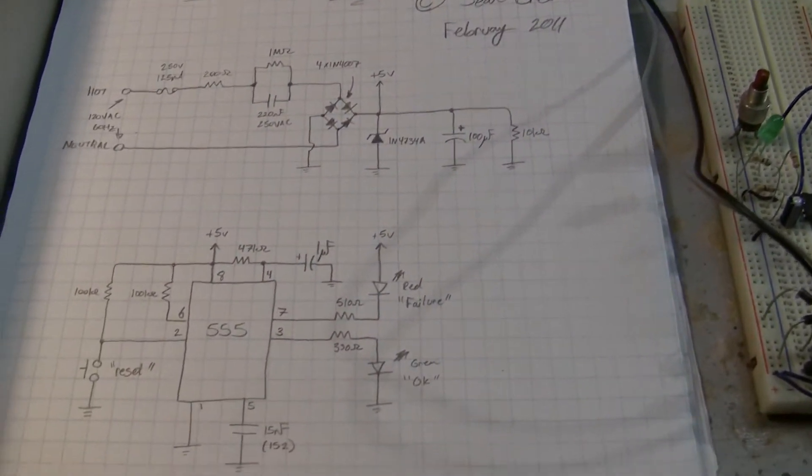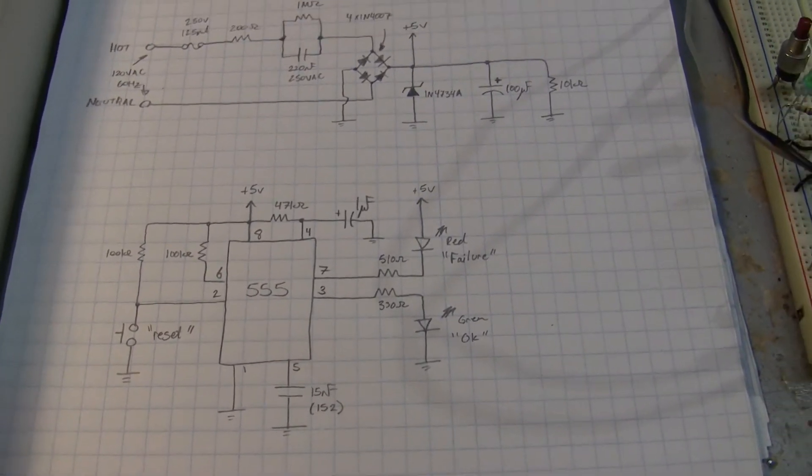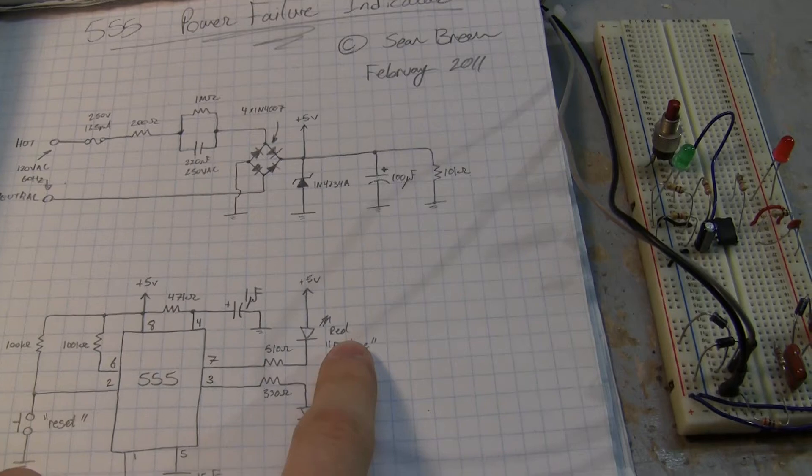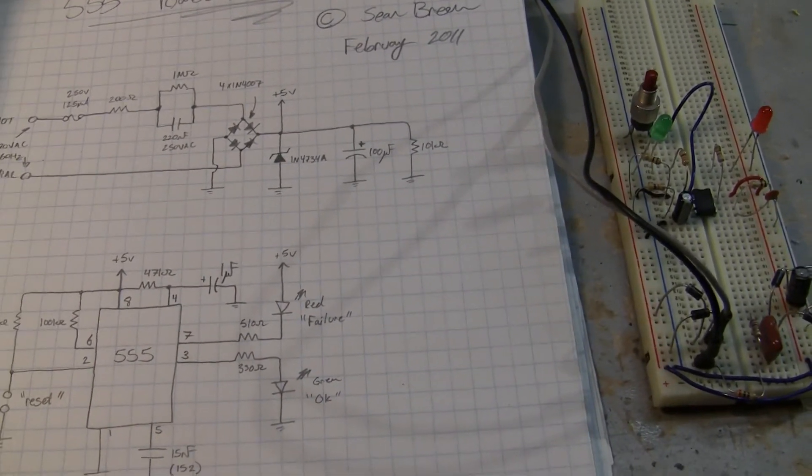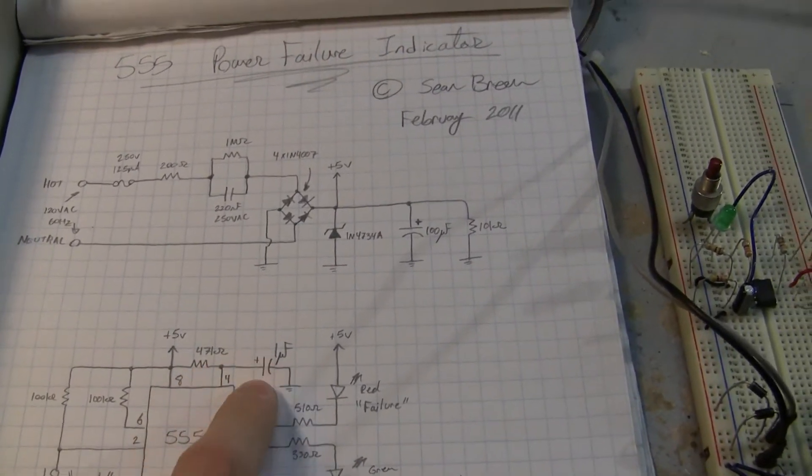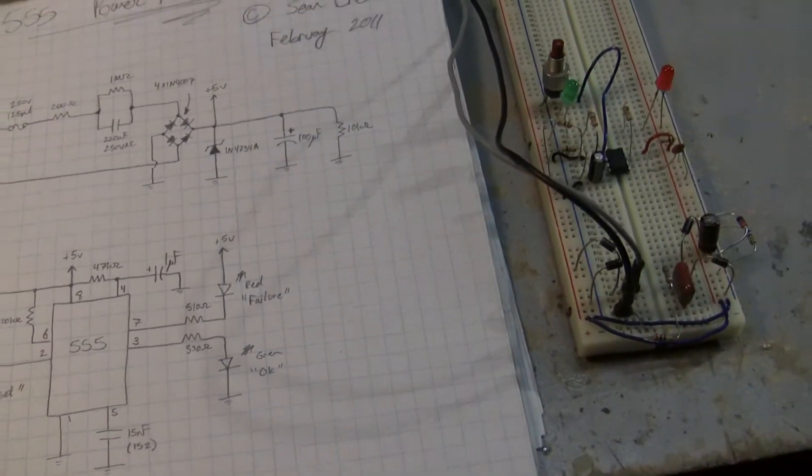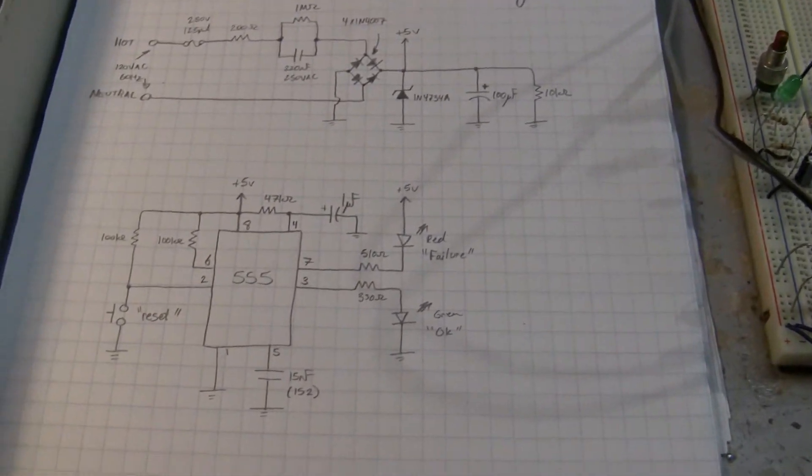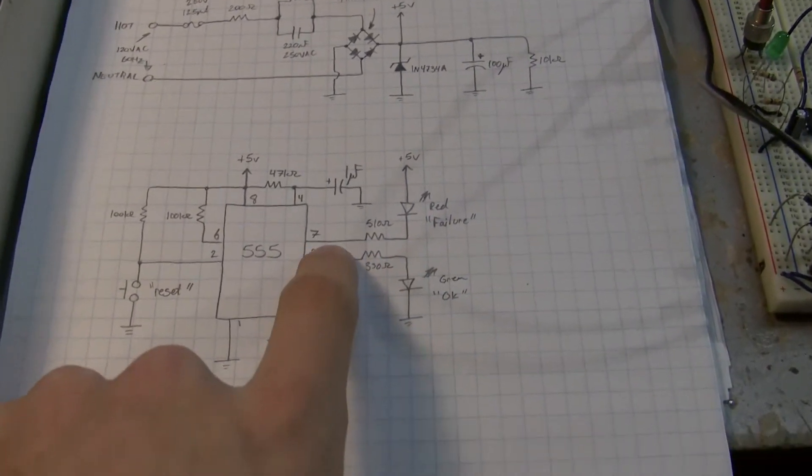So this circuit provides 5 volts down to my 555 circuit which is here. Basically what happens is I've got a red LED which is the failed state, and a green LED which is the okay, you've reset the device state. The circuit or the timer rather is reset by the 47k and the one microfarad on the reset pin of the 555.